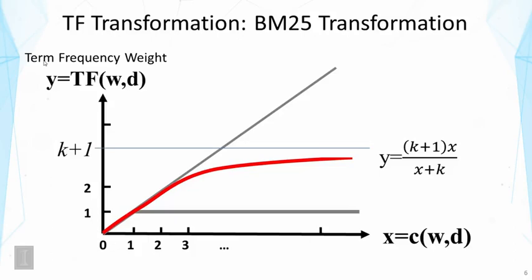Now furthermore, one interesting property of this function is that as we vary k, we can actually simulate different transformation functions, including the two extremes that I've shown here. That is the 0-1 bit transformation and the linear transformation.